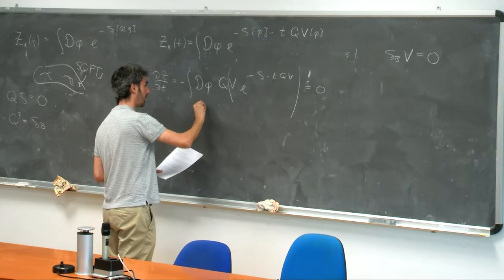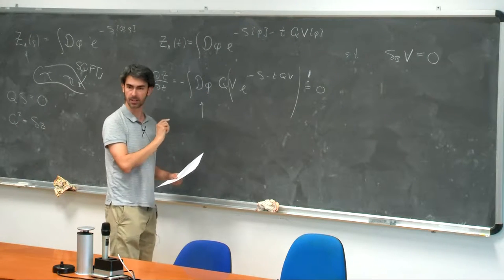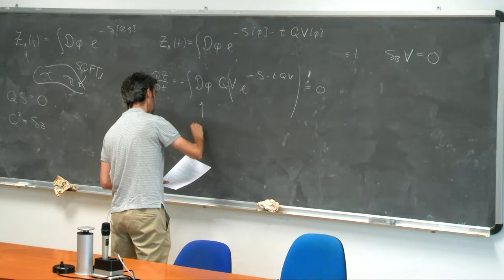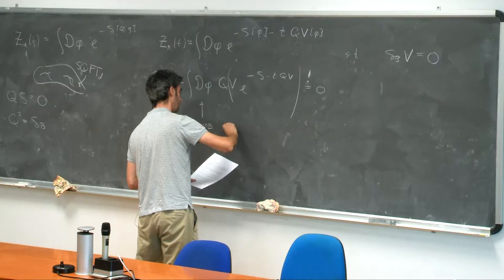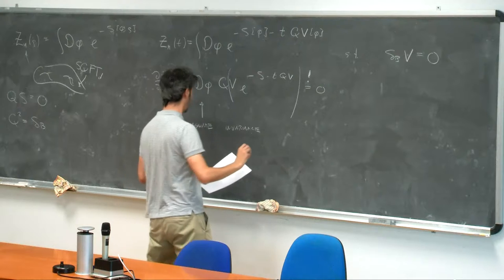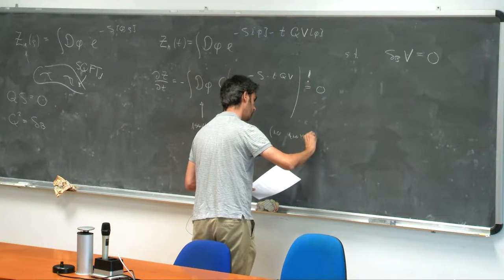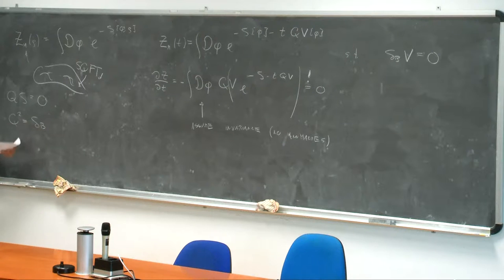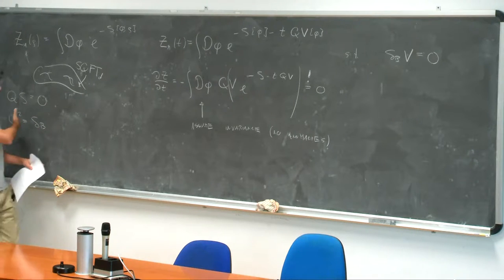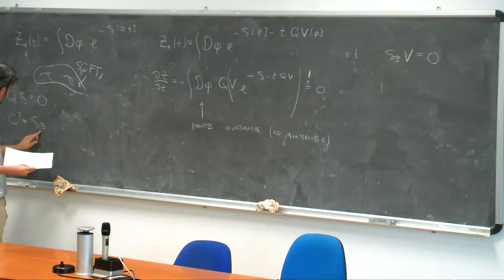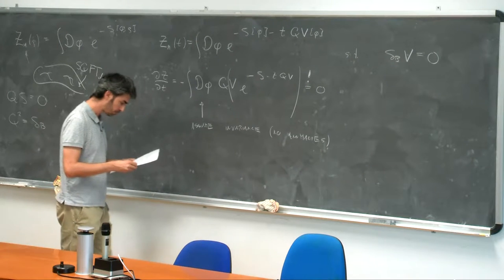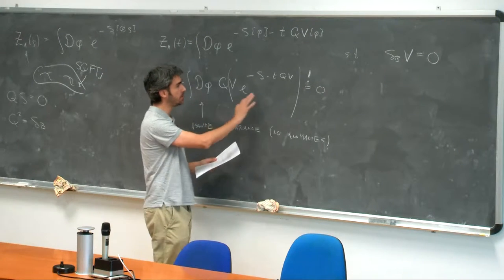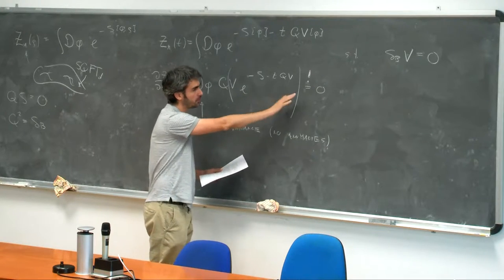We also have to assume that there are no anomalies — we also have to assume that the measure is invariant. In particular, since our supersymmetry algebra contains a bosonic symmetry, we know that bosonic symmetry can be anomalous. So if there is an anomaly here, there is the danger that the measure is not invariant, because if the measure is not invariant under the bosonic symmetry, it cannot be invariant under Q. So under these assumptions — that the measure is invariant and there are no boundary terms — this derivative is zero.